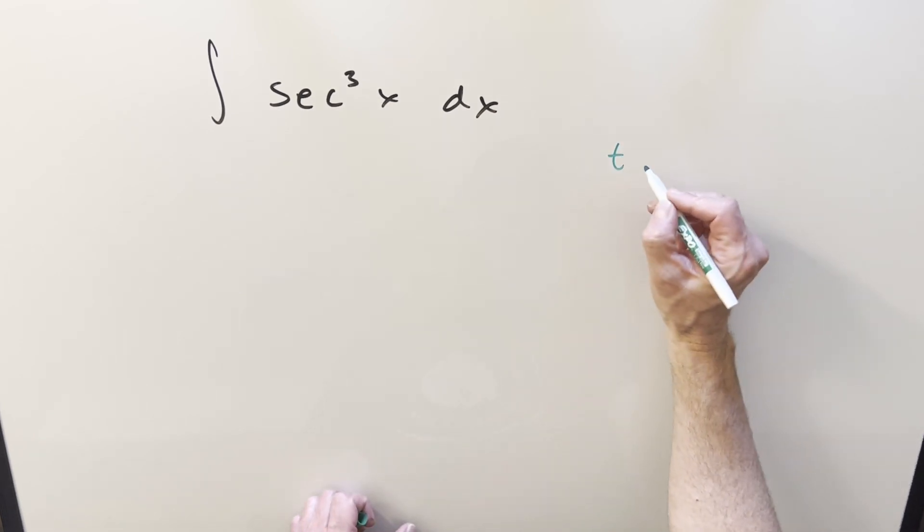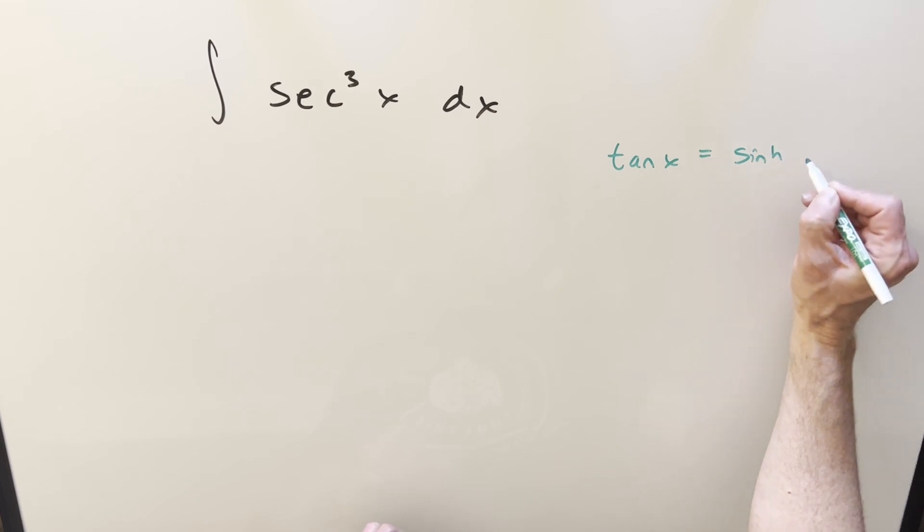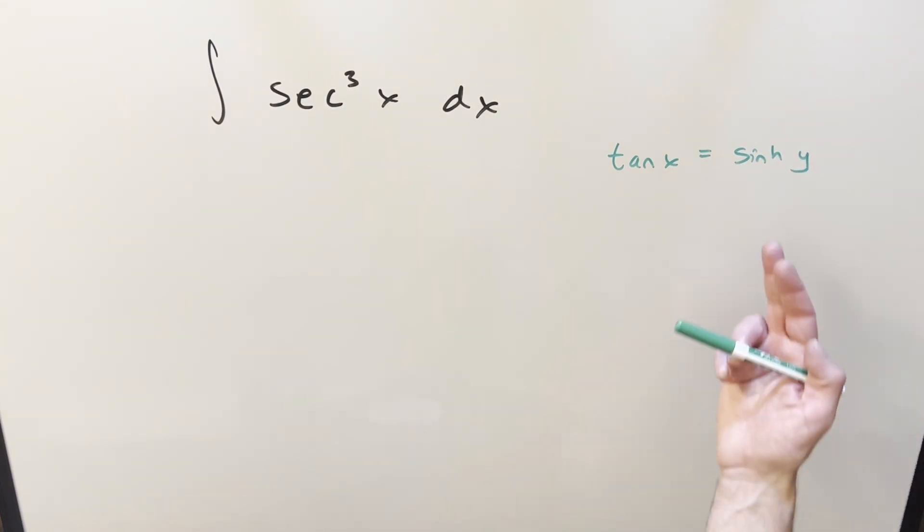The substitution is going to be tan x equal to sinh of y. It's pretty nice because there's a lot of scenarios where the hyperbolic trig functions actually are easier than the regular ones, and secant can be kind of a pain. So I think this is going to help us out or at least give us a nice alternative.